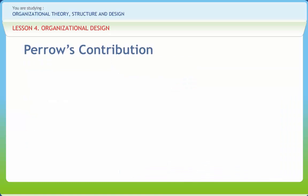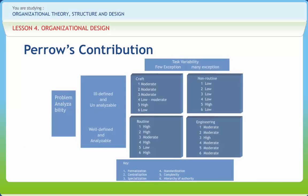The basic design dimensions and the resulting structural configurations play out in the context of the organization's internal and external environments. An organization's technology is an important contextual variable in determining the organization's structure. Perrow proposed a scheme based on two variables: task variability and problem analyzability.